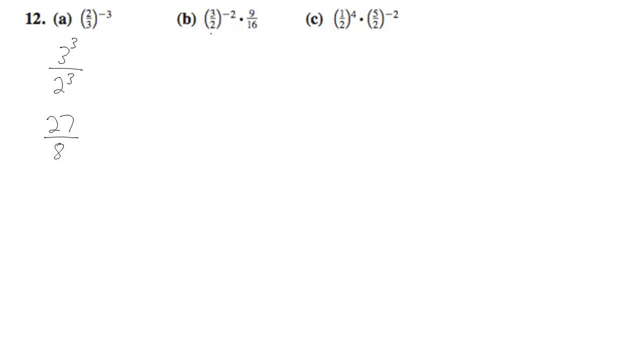Over here, we've got 3 halves raised to the negative 2, so that becomes 2 over 3 raised to the second, times 9 over 16.